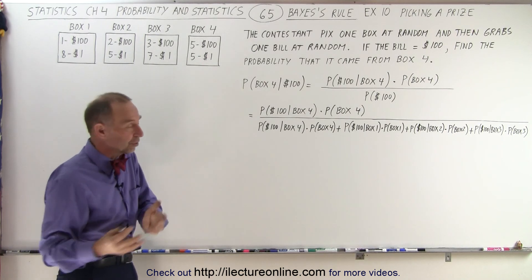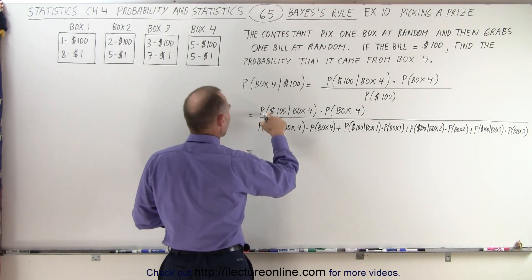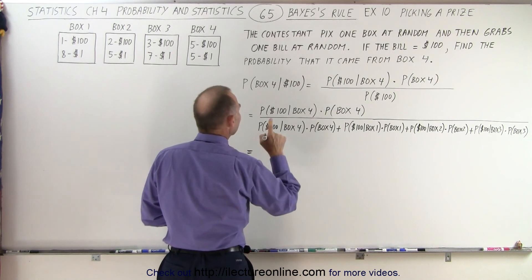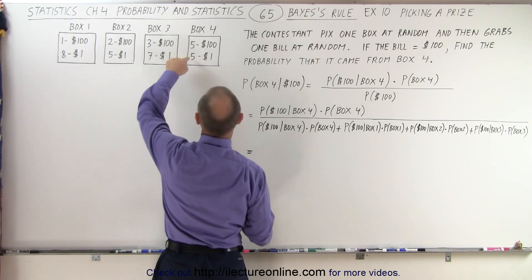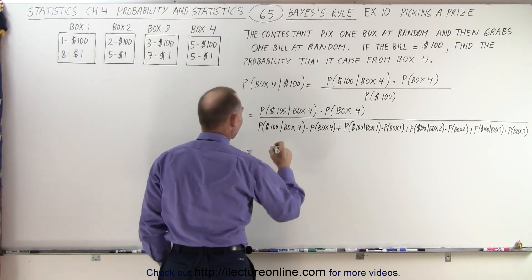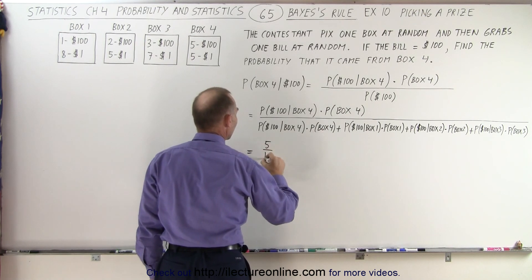So when we plug in the numbers, it will look as follows. This is equal to the probability that we picked a $100 bill given box four. Well, in box four, we have ten bills, and five of them are $100 bills. So that would be five out of ten.